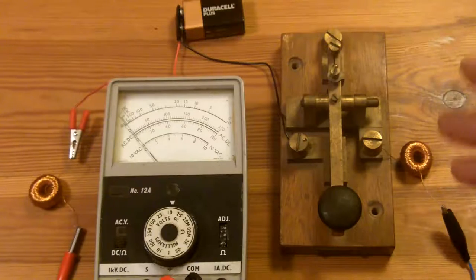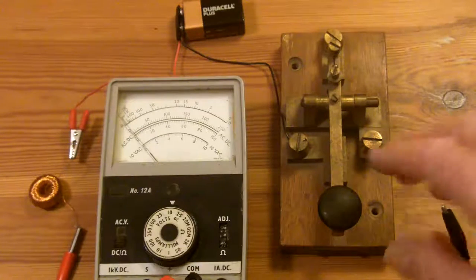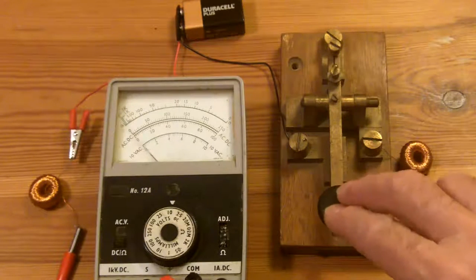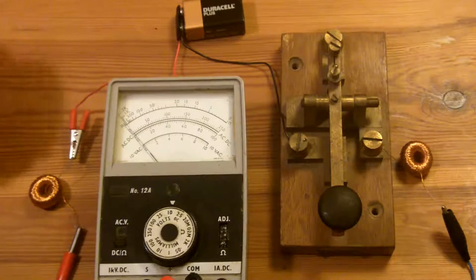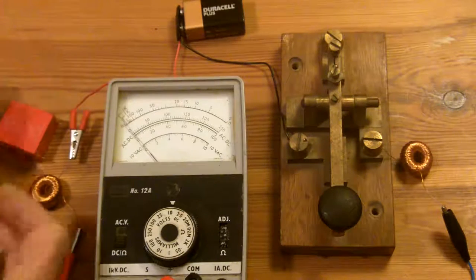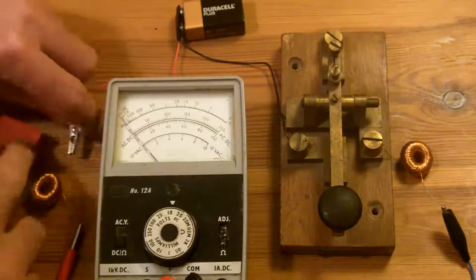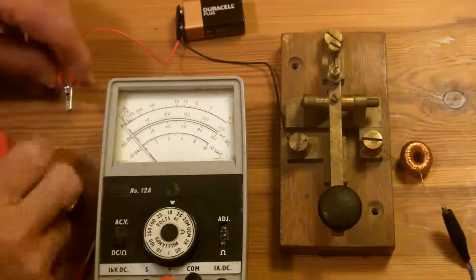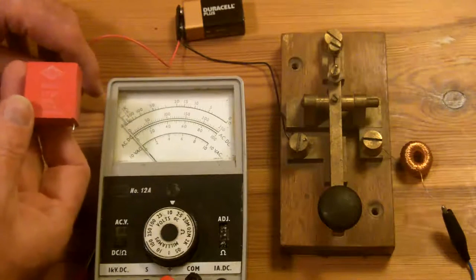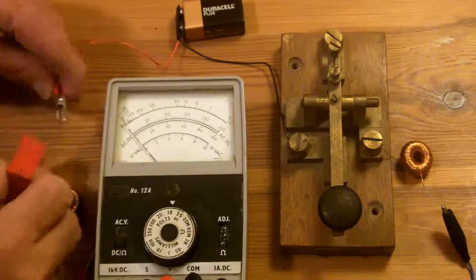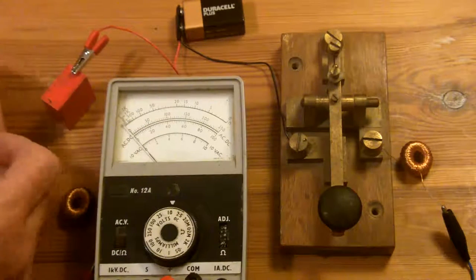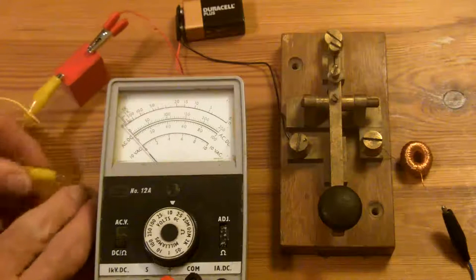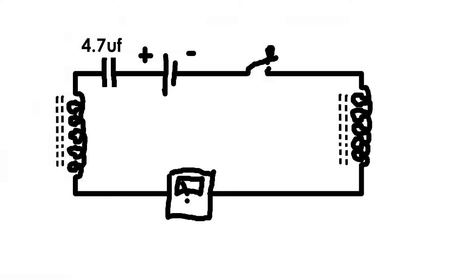Okay, so this is just a closer view of that setup. Now what I'm going to do is I'm going to add this capacitor into the circuit. So I'm going to disconnect the battery there. This is a 4.7uF capacitor. So I'm just going to add that into the circuit, so that's in series. And I'll show you the circuit diagram as it is now.